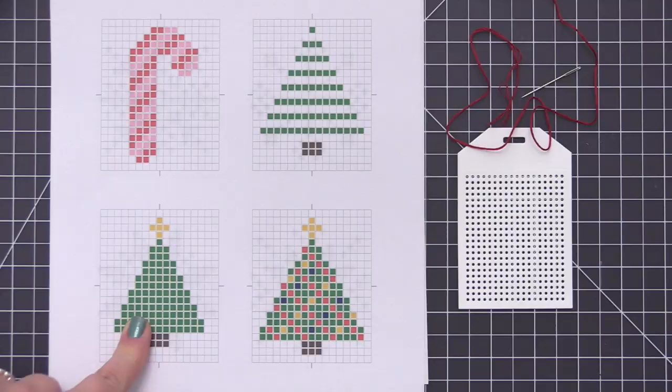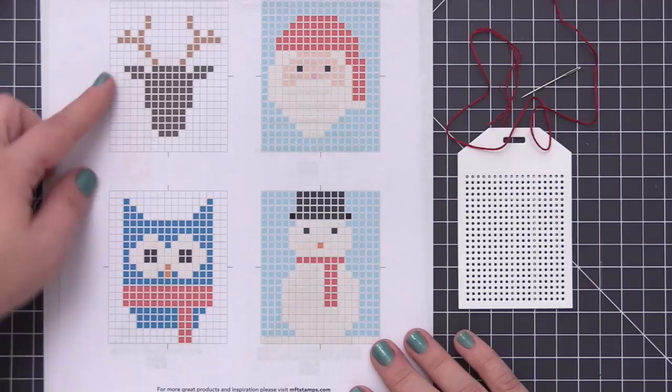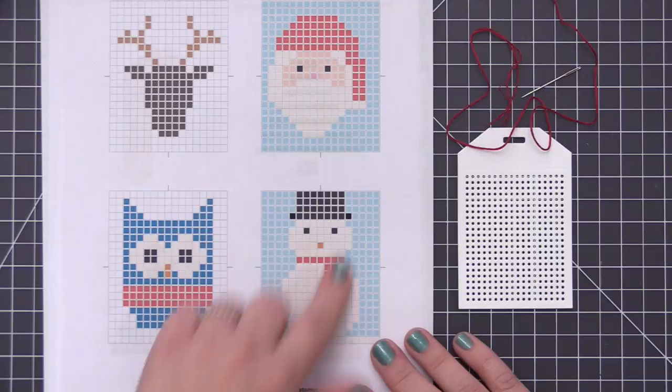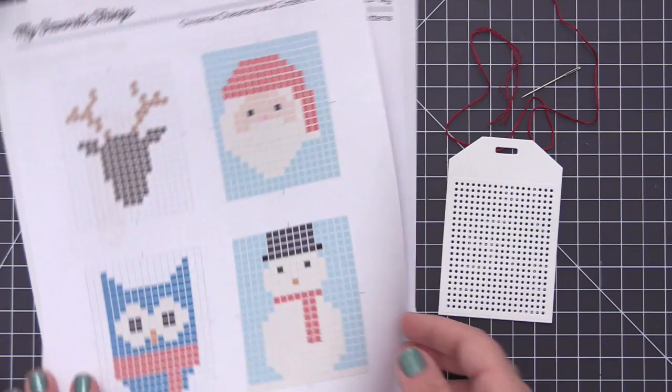To finish off the patterns, we have Christmas characters and critter patterns. This one includes Rudolph, Santa, a snowman, and the owl. These are pretty much the three tags that I created. You can keep Rudolph completely brown when you stitch him or you can add some red detail to the center of his nose. You can check those out on our blog. We will have those available for printing in our printable resources section on the sidebar.